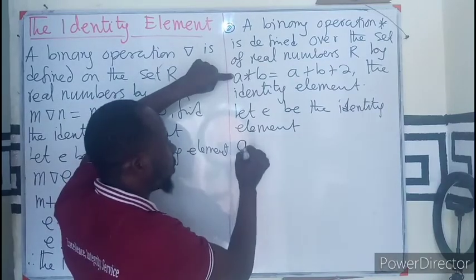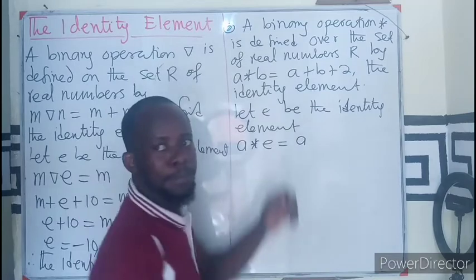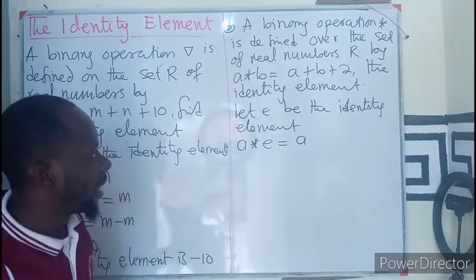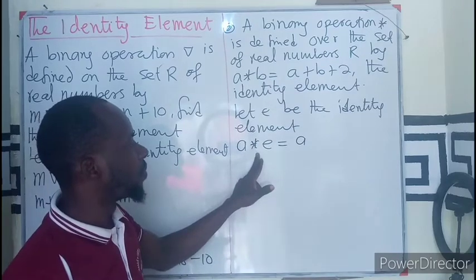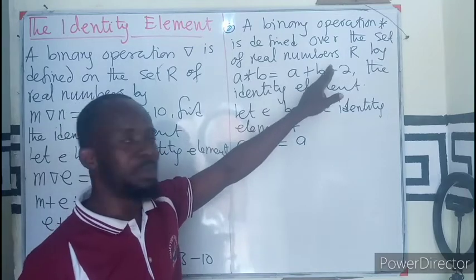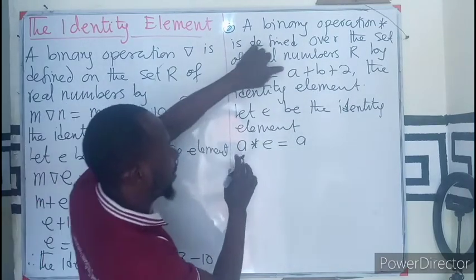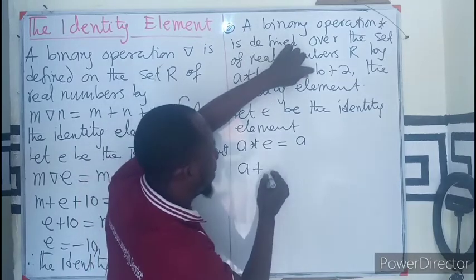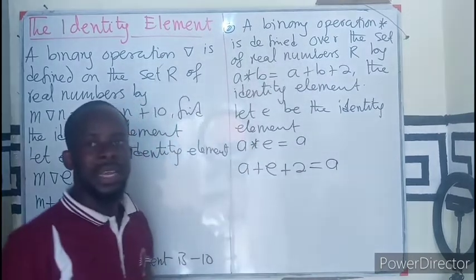So let's A star E give me A. But don't forget, there is a definition for the star. So what definition do we have? We have a definition for our star. What definition is that? A plus B plus 2. So in this case, I have the first term, A plus the second term, E equals to still A.